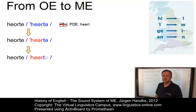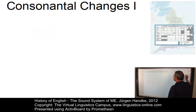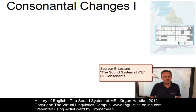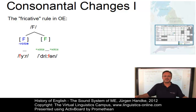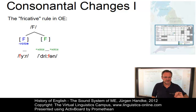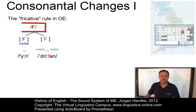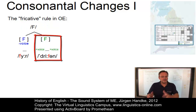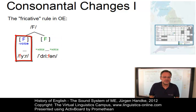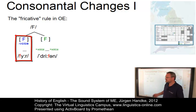Let us look at the phonemic changes in detail. Do you remember the Old English fricative rule? It was quite simple. It said that the fricatives — the dental fricative, the labiodental fricative, and the alveolar fricative — expressed by a placeholder capital, which you might call an archiphoneme, had two allophones each: a voiced one in voiced environments, for example 'drīfan', and a voiceless one elsewhere, as in the example 'fȳr'.